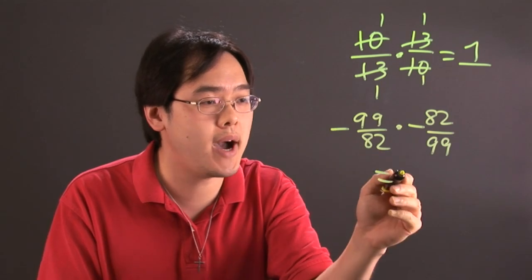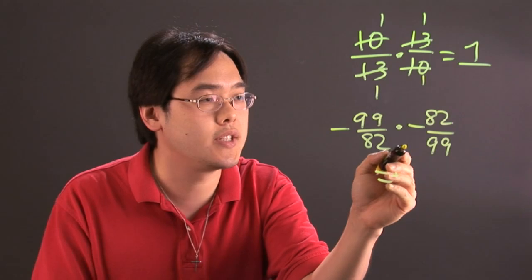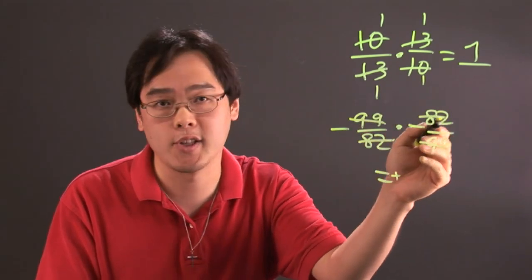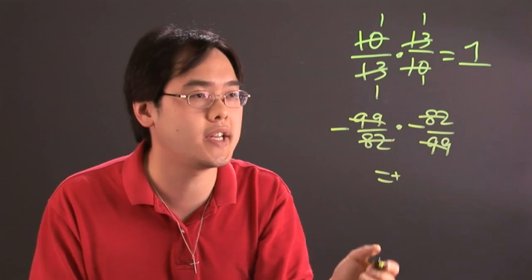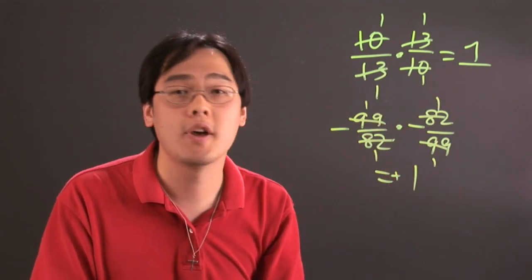Negative times a negative is going to give you a positive, so we're going to leave the positive as is. And as you can tell, 99s will also cancel and the 82s also cancel because one's in the numerator, one's in the denominator, and you're left with ones all over the place and you're left with positive 1.